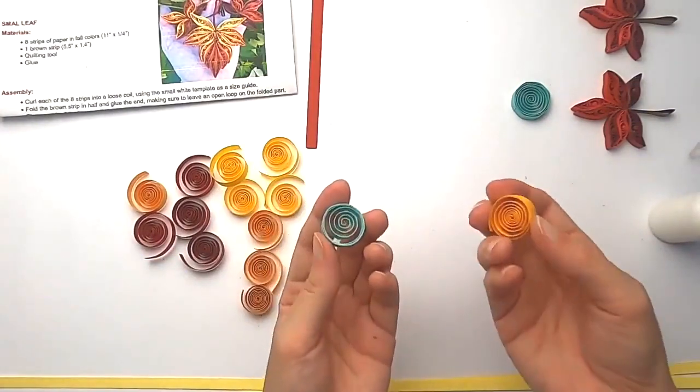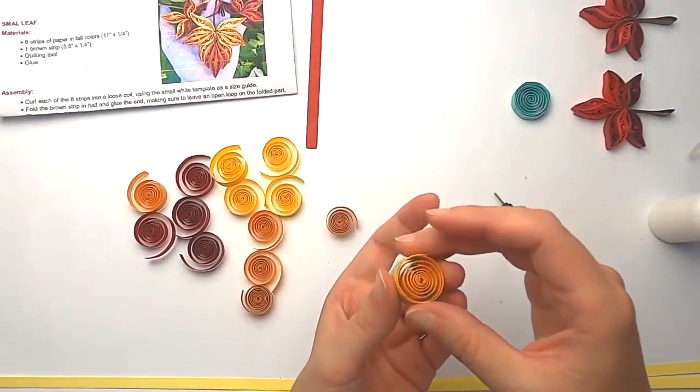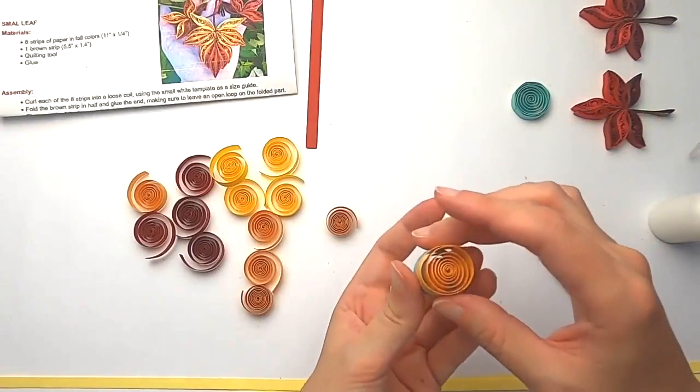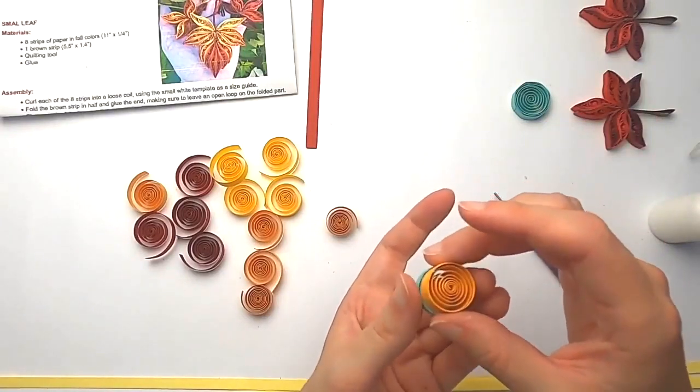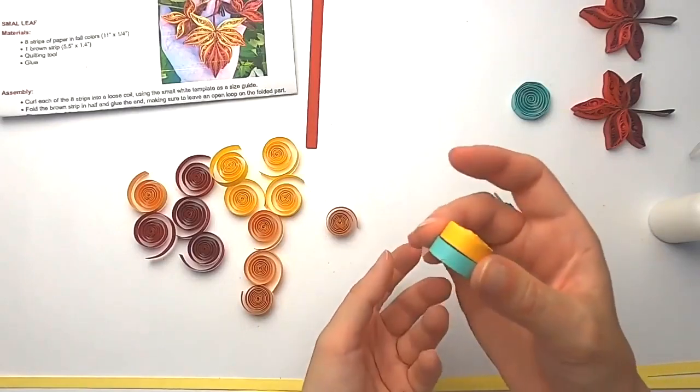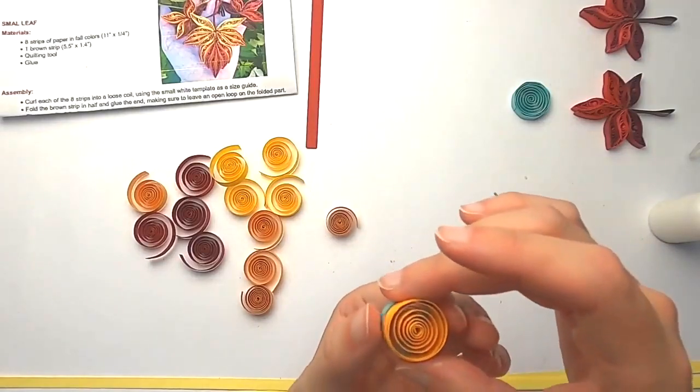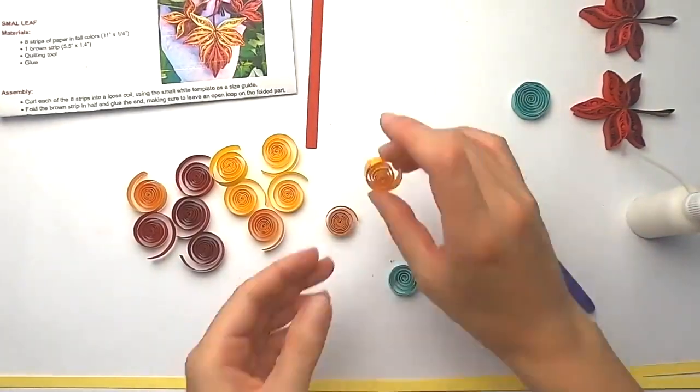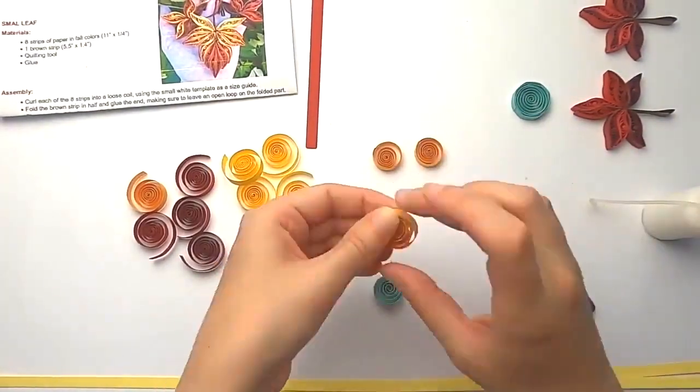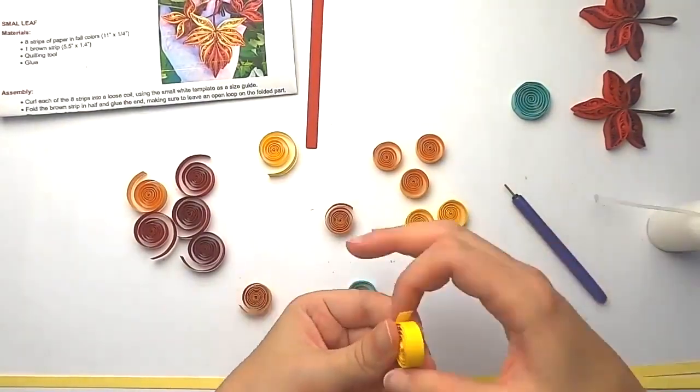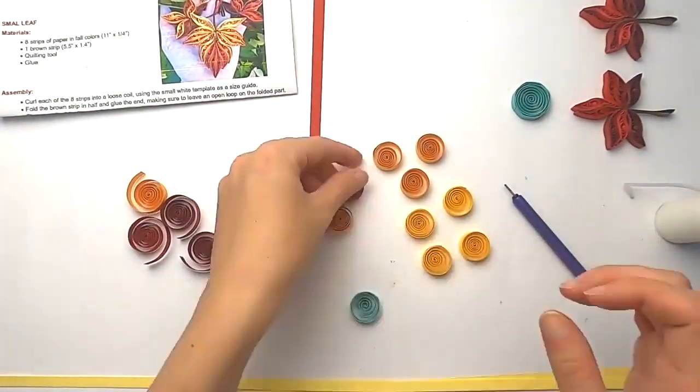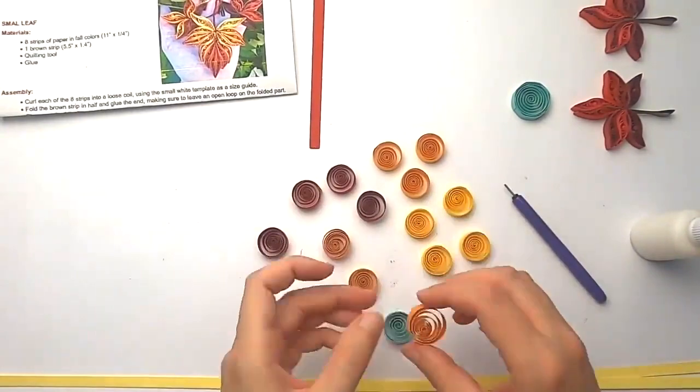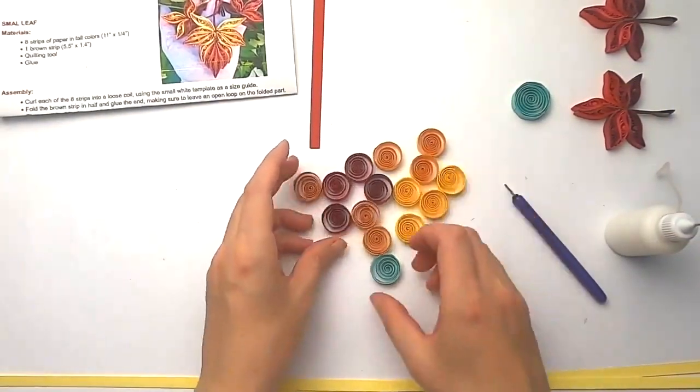Same process. Just use the template. Grab your coil. You can always, instead of doing this and making it smaller, you can always just kind of push it with your fingers and it will conform to the size. Just be gentle. You don't need to squeeze it too hard. Okay, those are all done.